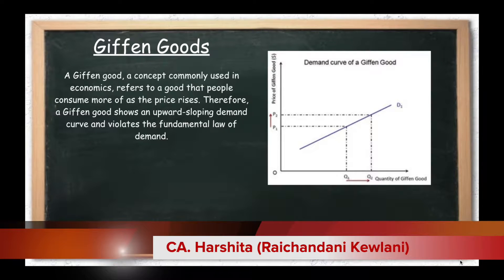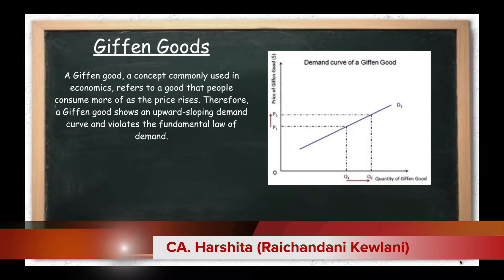What are Giffen Goods? First, we will link it with the basics. I told you in the previous session about the law of demand — there is an inverse relationship between the price of goods and quantity demanded. For example, if you have 100 rupees and the price is 10 rupees, you can buy 10 units. But if the price increases to 20 rupees, you can only buy 5 units. This is the law of demand.